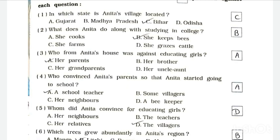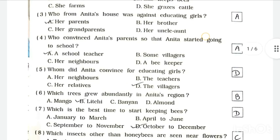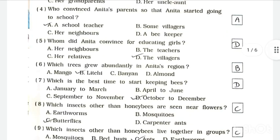Question Number 4: Who convinced Anita's parents so that Anita started going to school? Answer is A - a school teacher. Question Number 5: Whom did Anita convince for educating girls? Answer is D - the villagers.